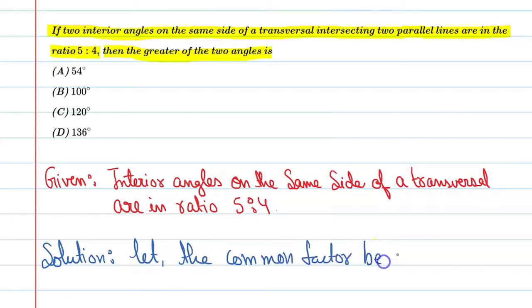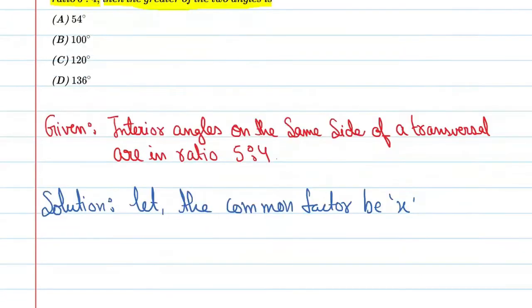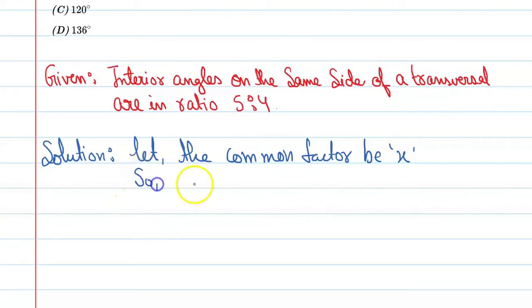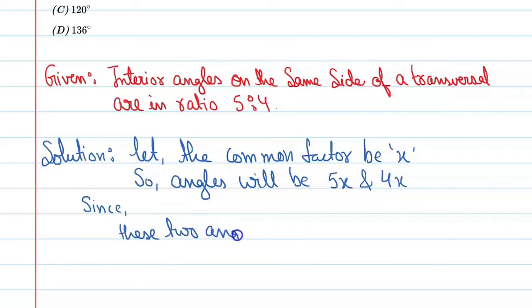Now, since these two angles are co-interior, we can say 5x plus 4x equals 180 degrees.